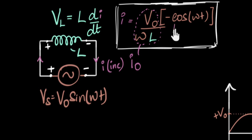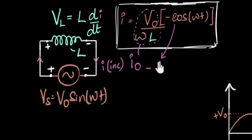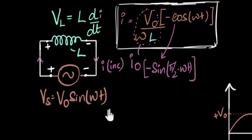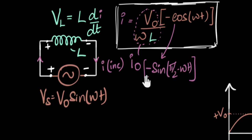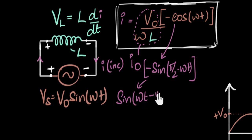All right, let's see. We have seen in trigonometry before that cos θ can be written as sine of (π/2 − θ). So minus cos(ωt) can be written as minus sine(π/2 − ωt). But I want to get rid of the negative sign as well. Another identity we've seen is that minus sine θ can be written as sine of minus θ — we can put the negative sign inside. These are all trigonometric identities; I'm just using them.